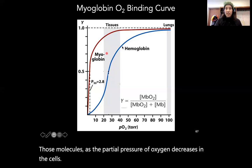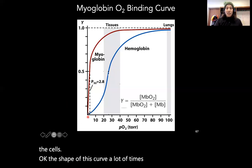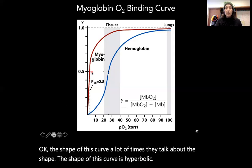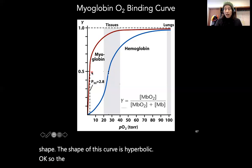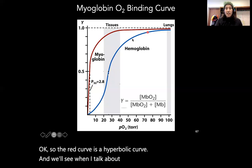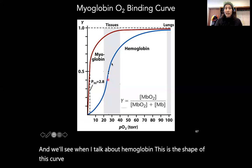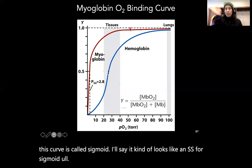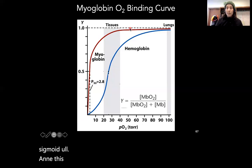The shape of the myoglobin binding curve is hyperbolic — that's the red curve. The blue curve for hemoglobin, which we'll look at next, is sigmoidal — see how it looks like an S.